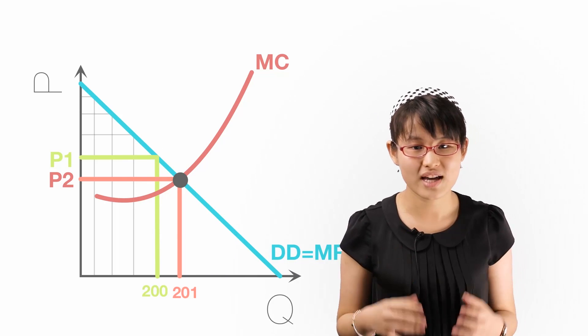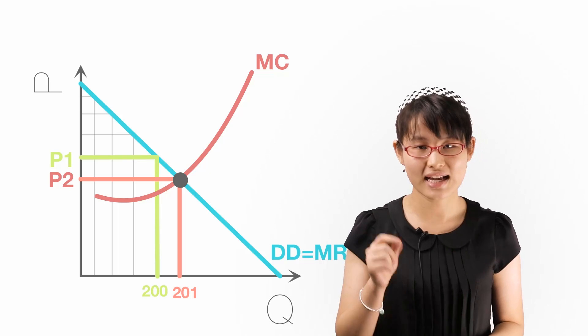It also explains why the MR curve of the price discriminating firm is exactly its demand curve.